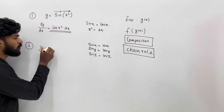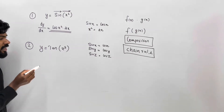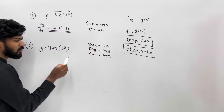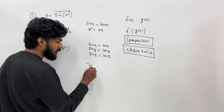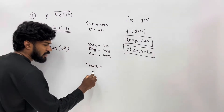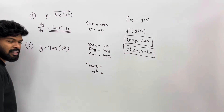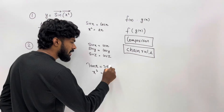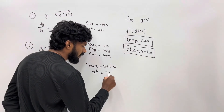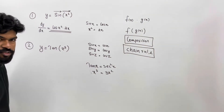y equals tan of x cubed. There are three functions: tan and x cubed. Tan x is the function; x cubed is the function. The derivative of tan x is sec²(x). The derivative of x cubed is 3x².